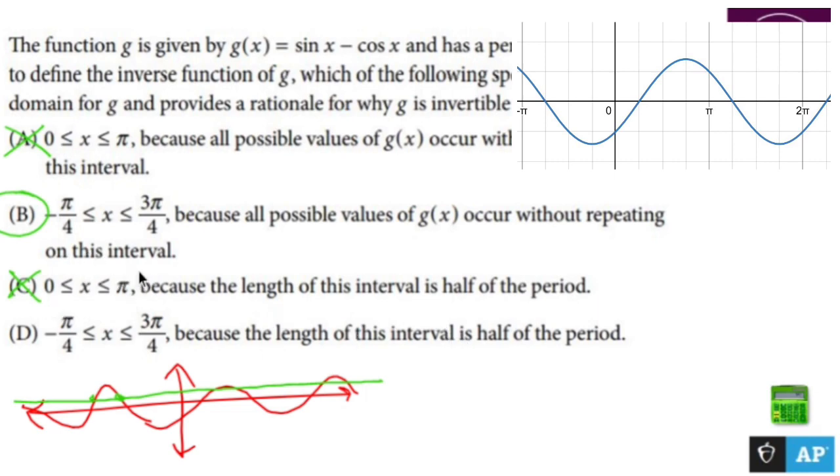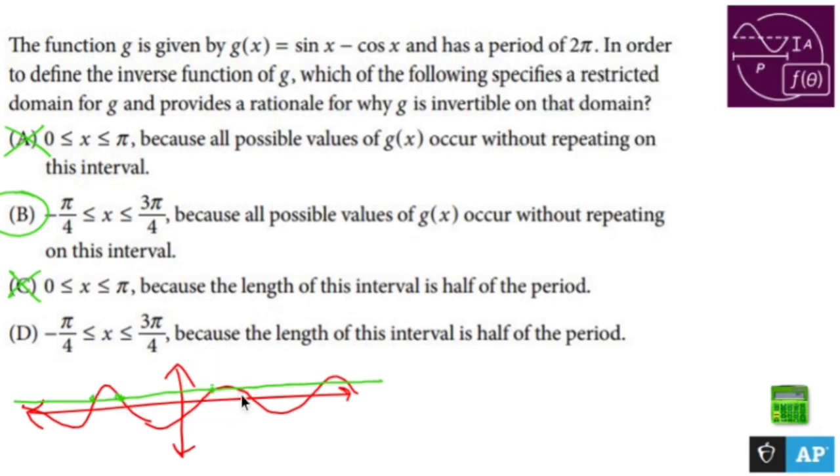No, because being half the period has nothing to do, like if I were to pick these points right here at the very tippy top, this fails the vertical line test. And this number is much less than half the period. So half the period has nothing to do with it. It has everything to do with whether or not the points that I choose pass the horizontal line test.